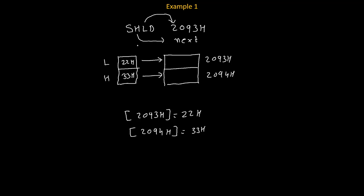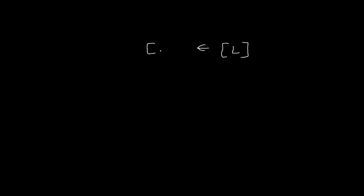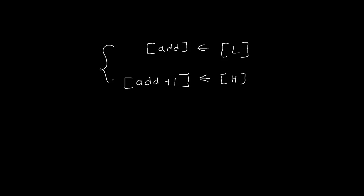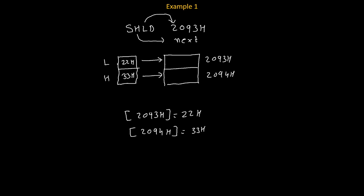Now let's talk about the format of this instruction. In SHLD, we simply copy the content of L to the given address and the content of H to the next address, where next address means the given address plus 1. This is the format of the SHLD instruction.